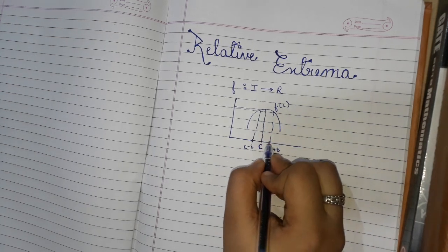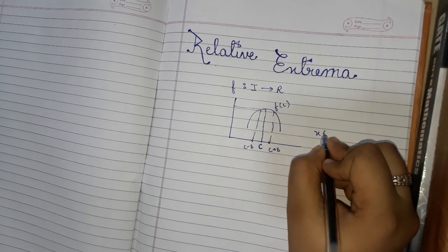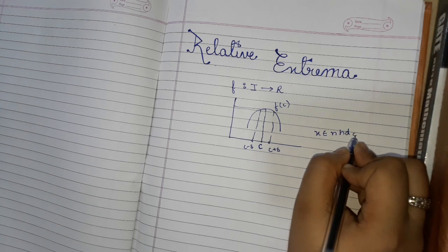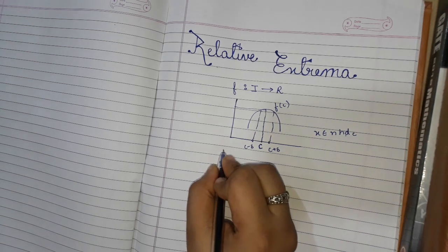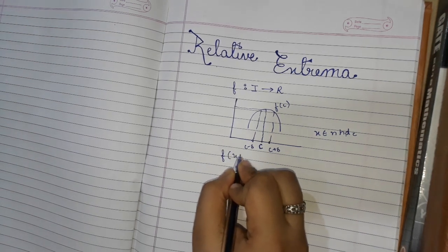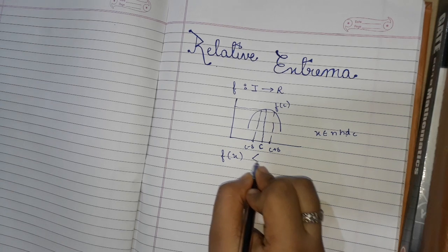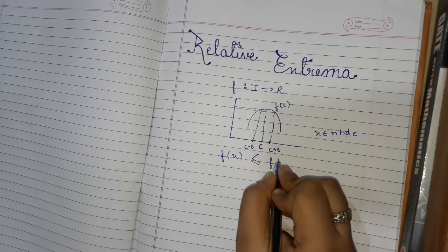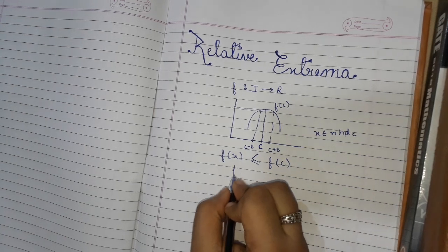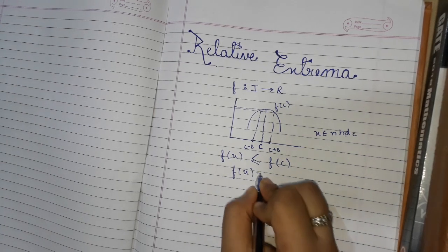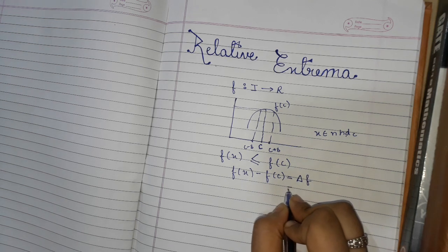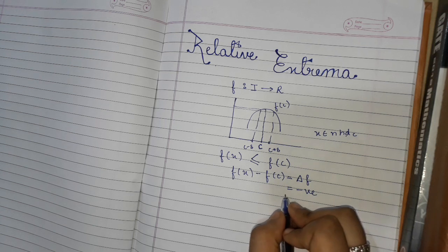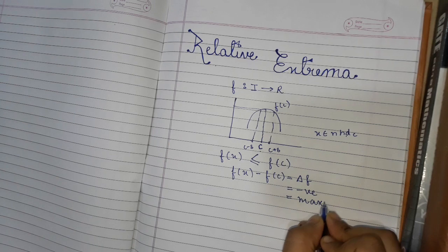Now, if we take a point x that belongs to the neighborhood of c, such that f(x) is less than or equal to f(c), that is f(x) minus f(c) — which we call delta f — is a negative quantity, then we call that relative maxima exists at c.